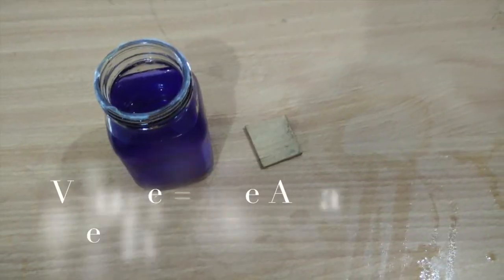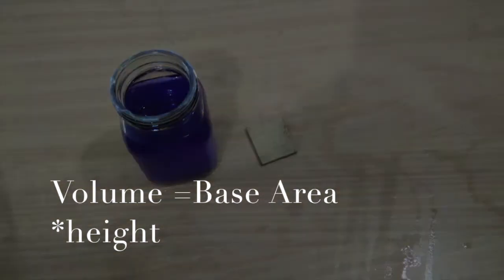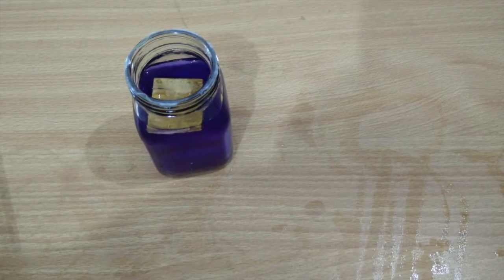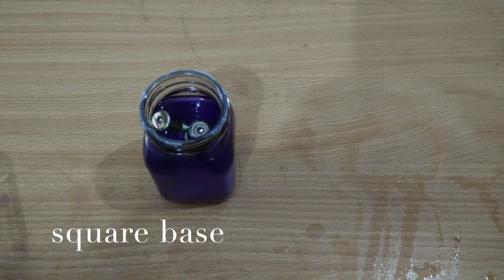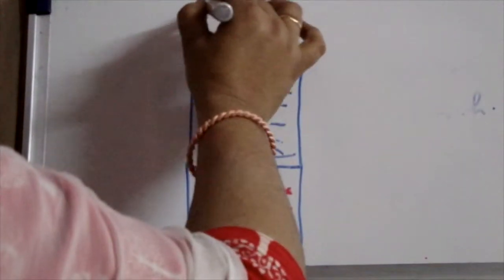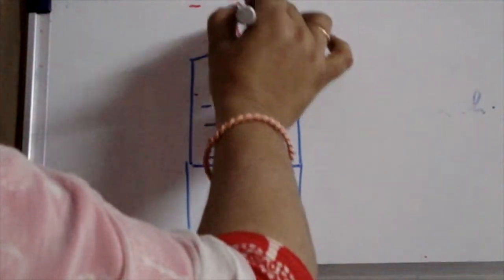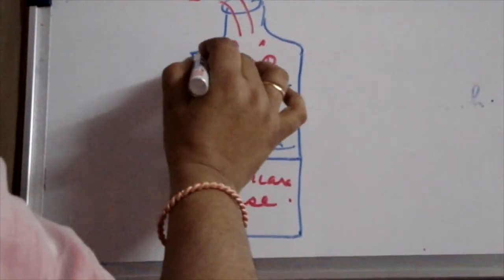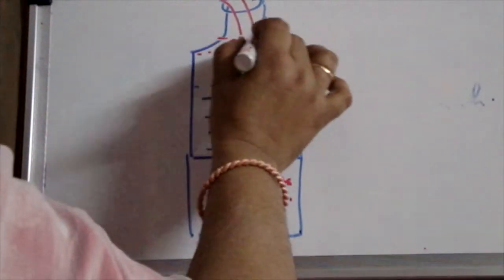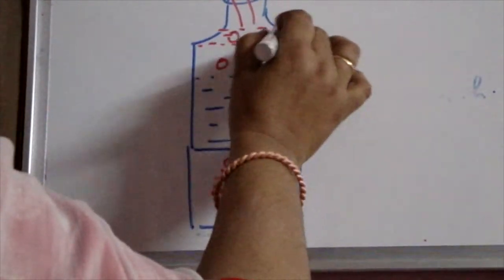In a square base container, base area is area of square and volume of raised liquid will be product of base area and height. Height is calculated as difference of new and original height of liquid.